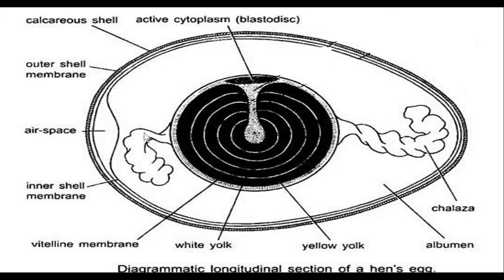On both sides of the yolk is a structure called the chalaza. It arises as a single fiber from the yolk, extends towards the opposite side of the egg, and because of cell movement during development, this fiber coils repeatedly to form a rope-like structure. The chalaza basically helps in keeping the yolk at the center of the egg.